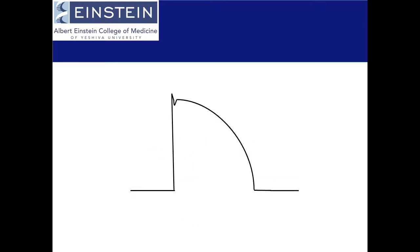Let's now look at a single action potential for a ventricular cardiomyocyte. Here's the normal cardiomyocyte action potential. Sodium comes into the cell, stimulating depolarization. Then potassium leaves and calcium comes in, allowing for contraction. And then potassium leaves, allowing for repolarization.